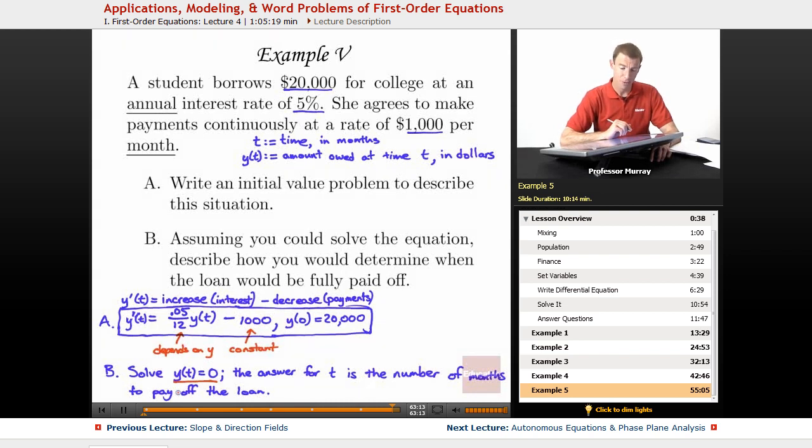So just to recap here, we wrote our initial value problem. We set up our variables, t is always time, y of t is the quantity we're keeping track of, which is the amount she owes at time t. Got to be careful about your scale here, because part of the problem was given in months, and part of the problem was given in years. So we said, okay, we're going to make our time scale be months.